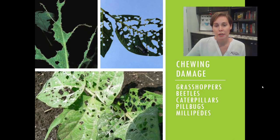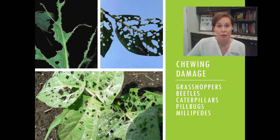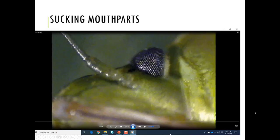The typical chewing insects we see in our landscape — while there are many insects that have chewing mouthparts — by and large you're looking at grasshoppers, beetles, caterpillars, and sometimes pill bugs and millipedes.